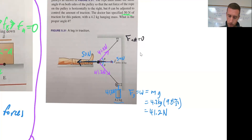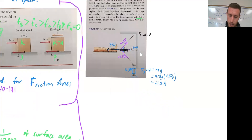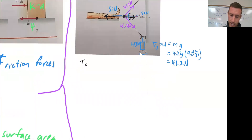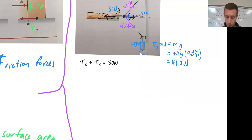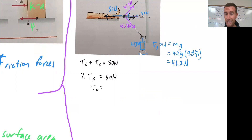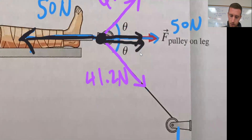I have two ropes — one there and one there — and this is the horizontal components only. The tension force in x plus the tension force in x has to equal 50 Newtons. Since it's the same rope with the same tension force, two times the tension force in x equals 50 Newtons. So the tension force in the x direction has to be equal to 25 Newtons. So these x components are 25 Newtons each.